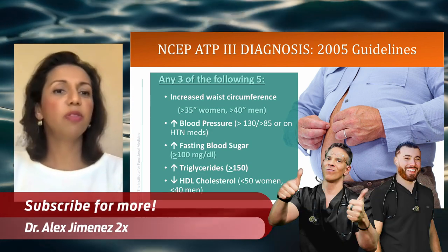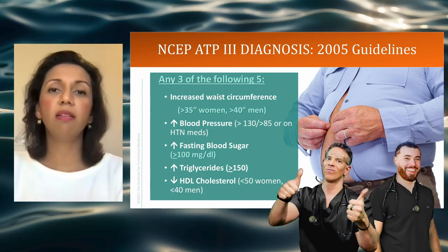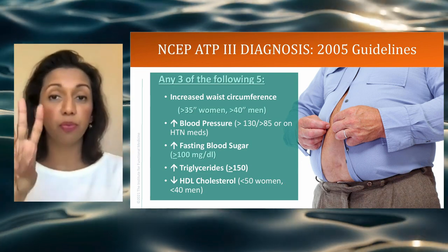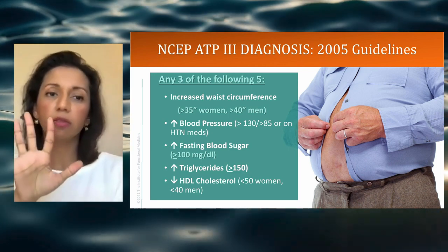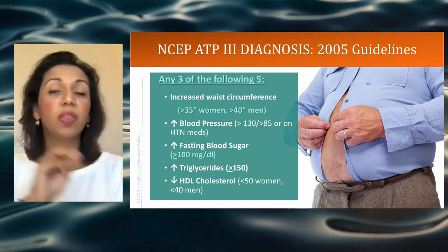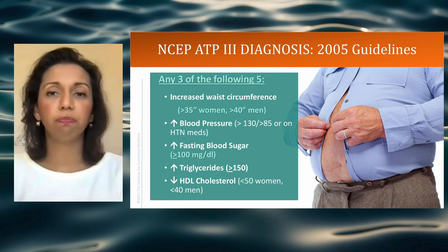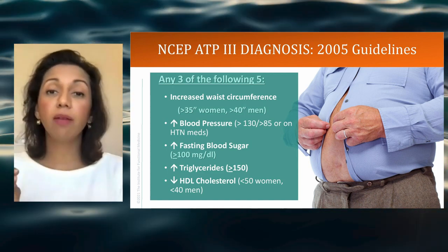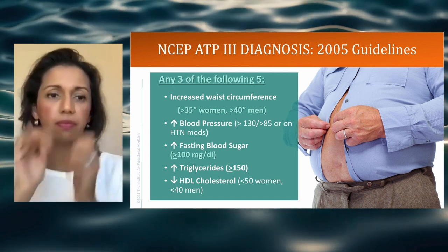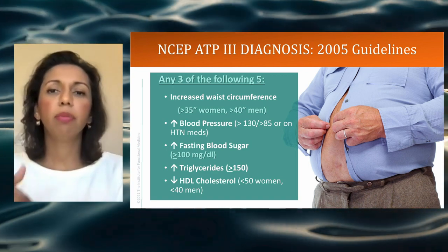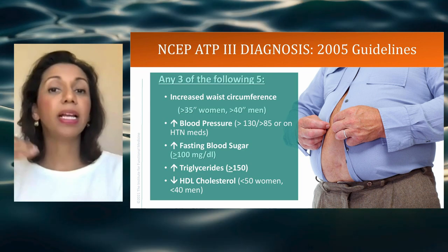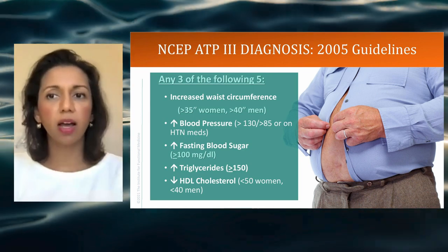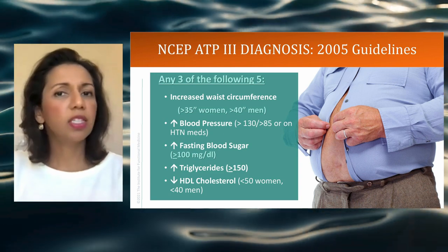In 2005, the ATP3 guidelines tell us that a patient must meet three out of five criteria to get the diagnosis of metabolic syndrome. Those criteria are around waist circumference — which really is about visceral adiposity — blood pressure, blood glucose, triglycerides, and HDL. You can see the cutoffs there.